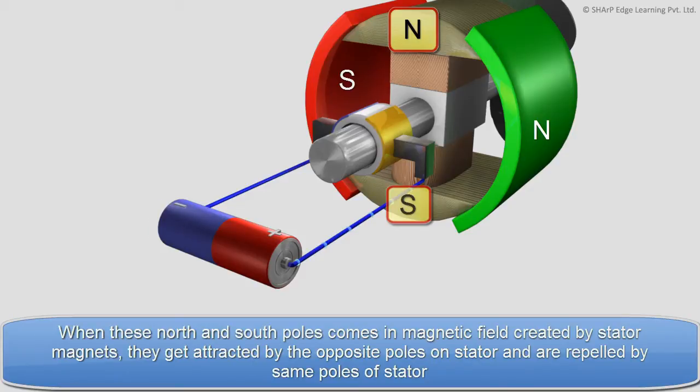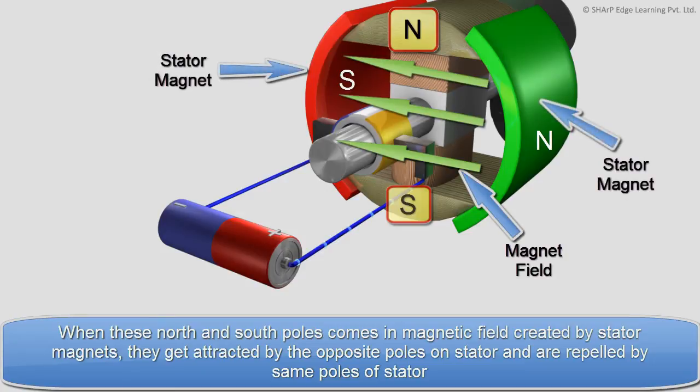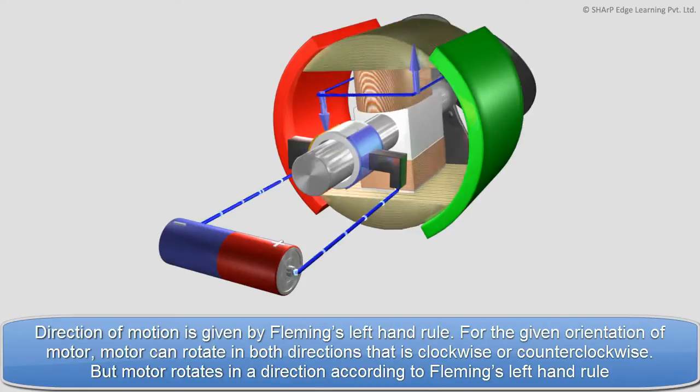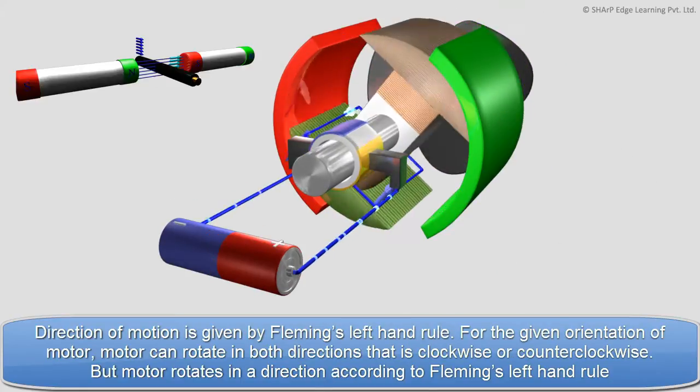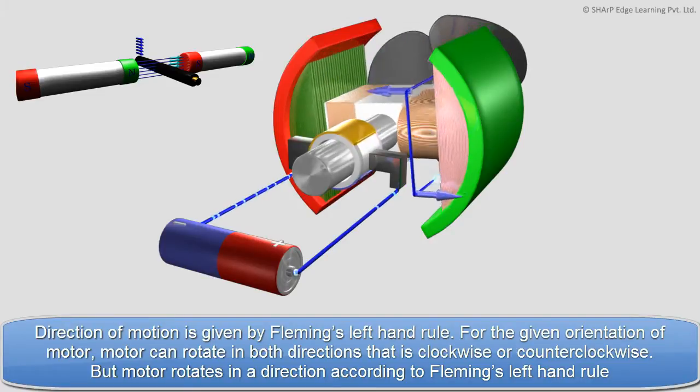When these north and south poles come in magnetic field created by stator magnets, they get attracted by the opposite poles on stator and are repelled by same poles of stator. The direction of motion is given by Fleming's left hand rule.